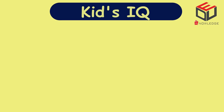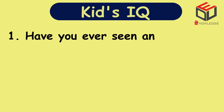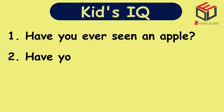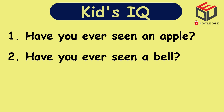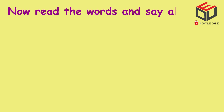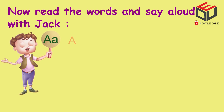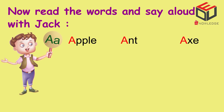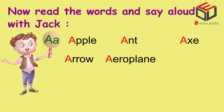Kids IQ. Have you ever seen an apple? Have you ever seen a bell? Now read the words and say aloud with Jack. A — Apple. Ant. Axe. Arrow. Aeroplane. Alligator.